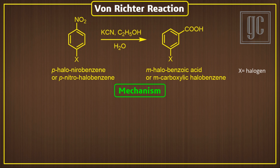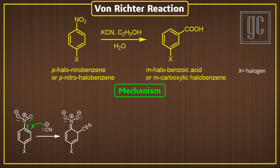Now we are going to discuss the mechanism of this rearrangement. In the presence of basic conditions, the cyanide ion attacks on the highly electron-deficient position in parahalonitrobenzene, and addition of cyanide takes place. Due to this addition, the pi electrons in the molecule rearrange, and benzene loses its aromaticity. Now the negatively charged oxygen atom attacks on the cyanide functional group, and as a result, a five-membered ring intermediate is formed.